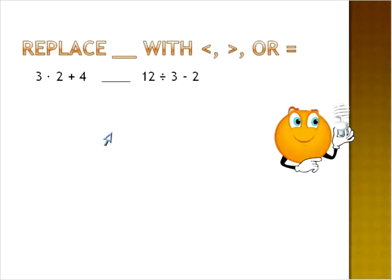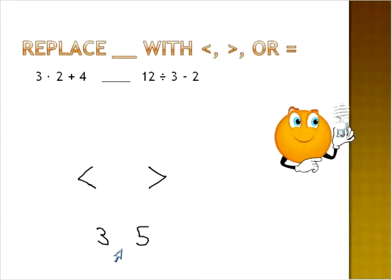Just a quick review on what those symbols represent. This symbol here is called the less than symbol, and the other one is the greater than symbol. Essentially what they do is they point to the smaller number — this is the smaller end and this is the larger end. So if you have two numbers like three and five, you would put the appropriate symbol in here. The appropriate symbol in this case would be the less than sign.